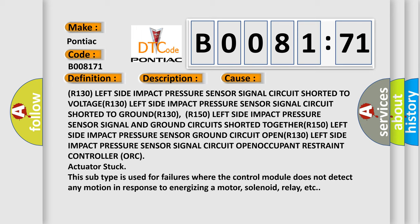R130 left side impact pressure sensor signal circuit open, occupant restraint controller (ORC) actuator stuck. This subtype is used for failures where the control module does not detect any motion in response to energizing a motor, solenoid, relay, etc.